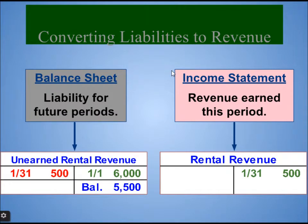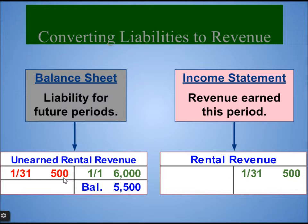Converting liabilities to revenue on the balance sheet shows the liability for future periods as unearned revenue. On the income statement, it shows revenue earned this period. The journal entry: debit unearned rental revenue $500, credit rental revenue $500. The balance of the liability account is now $5,500 at the end of the first month.